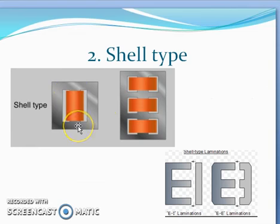The width of the central limb is double that of the outer limb. Mechanical strength of shell type transformers is high compared to core type transformers, and losses are less compared to core type.